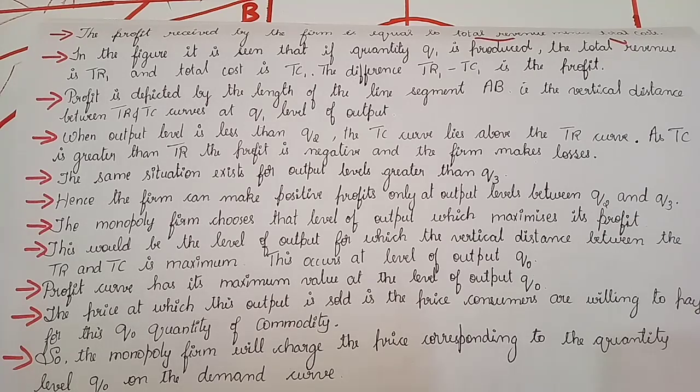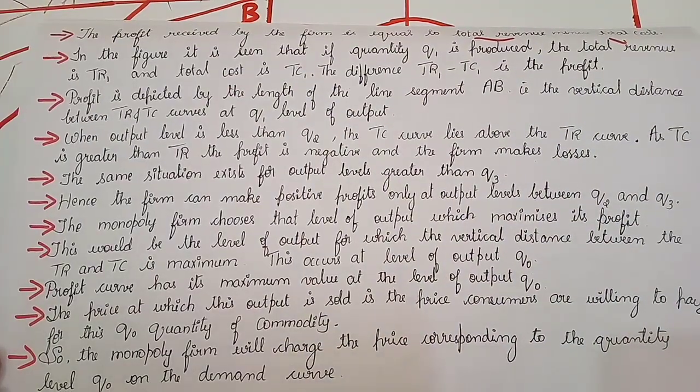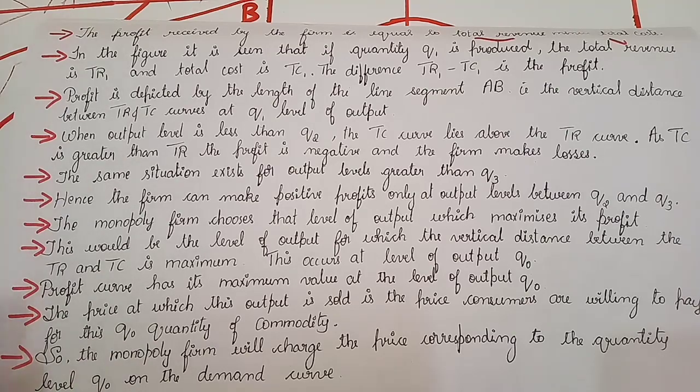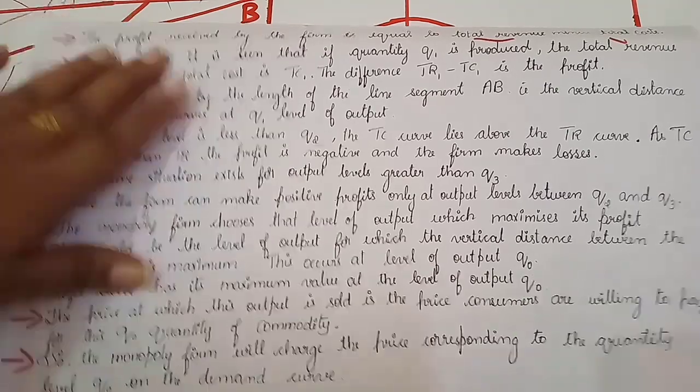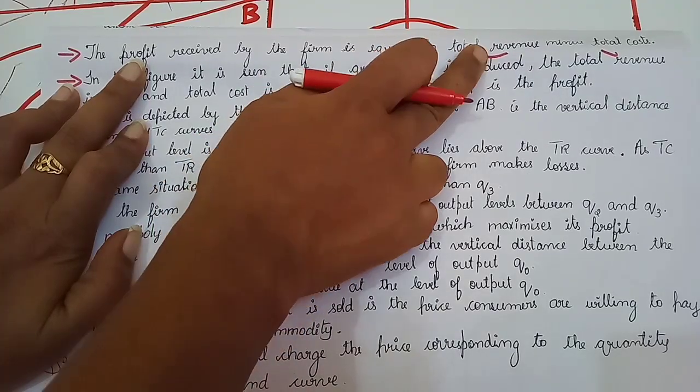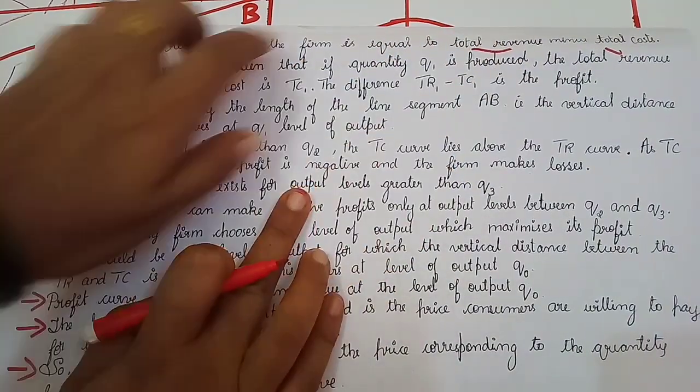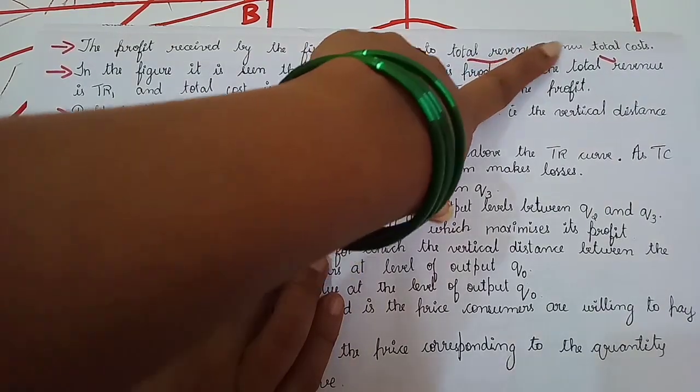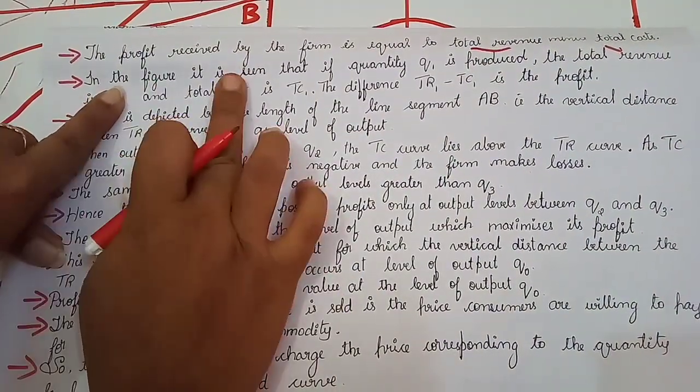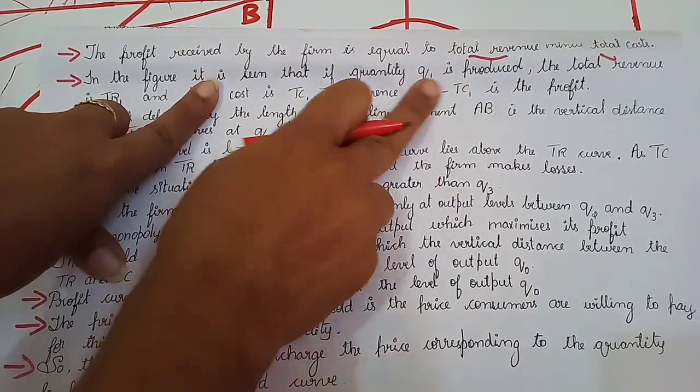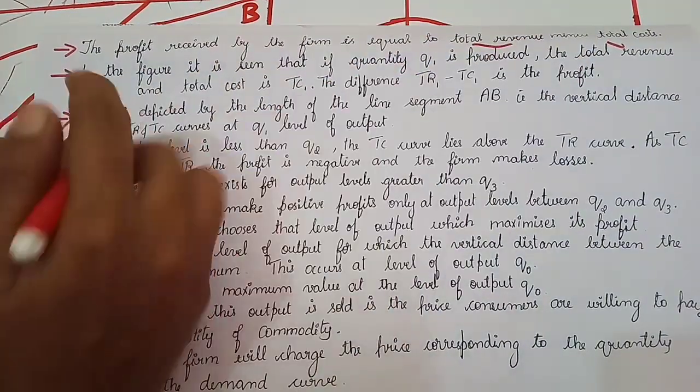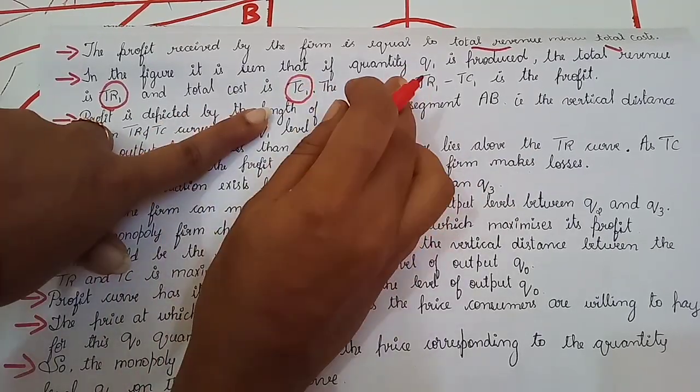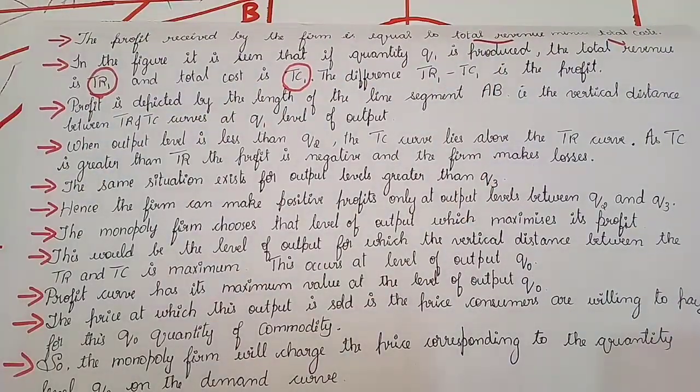So quickly we shall look into the notes. I have written point-wise, you can write in paragraph form, whichever is your choice. This will be easy for you to understand. So the profit received by the firm is equal to total revenue minus total cost. This is something we know, how to calculate profit.